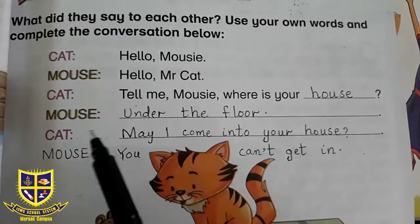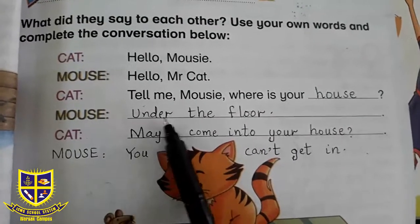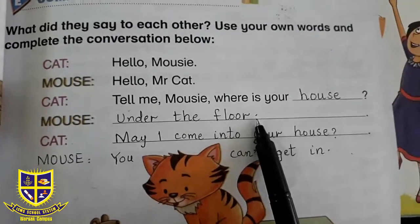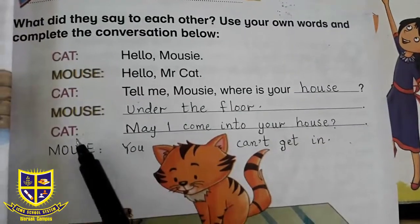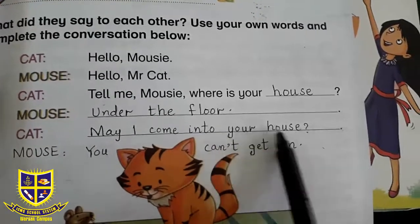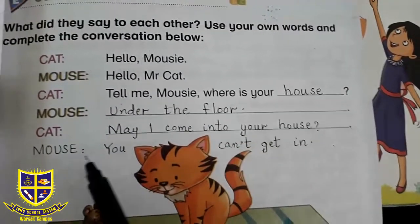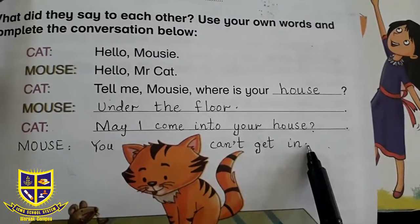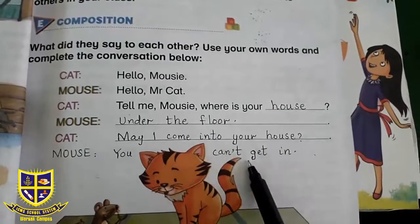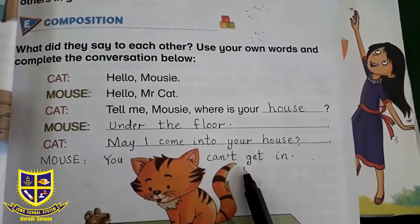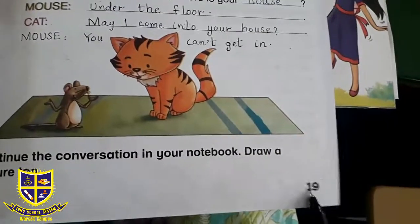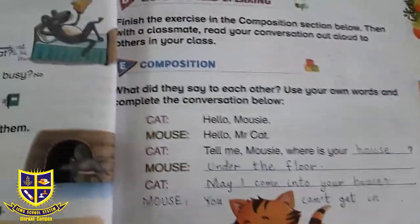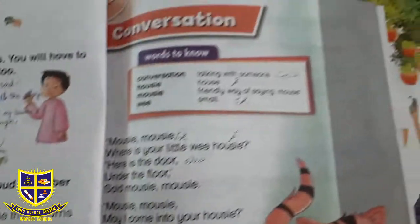Mouse نے answer دیا تھا 'under the floor' — یہاں full stop آئے گا۔ Cat نے question پوچھا تو question mark لگے گا: 'May I come into your house?' اور mouse کہتا ہے 'You can't get in' — full stop۔ Dear students، ہم نے اس conversation کو یہاں تک complete کر دیا۔ آپ نے اسی طرح neat and tidy لکھنا ہے book میں — یہ تھا ہمارا page 19 کا کام اور یہ تھی ہماری exercise of the poem 'Conversation.'